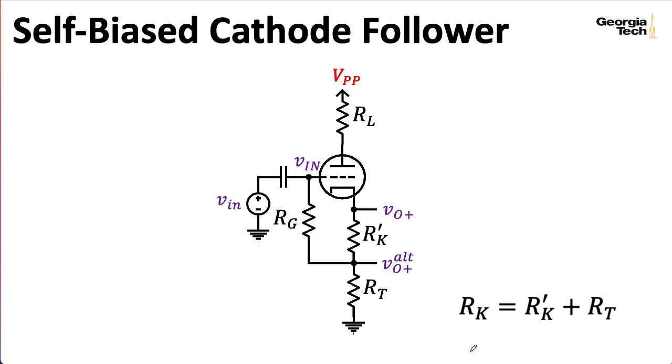As a bit of review, we split the cathode resistance into two separate resistors, and you can take the output from two different points. I've mostly seen people take the output directly from the cathode. In this practical self-bias scheme for the cathode follower, we connect the grid leak resistor to this middle point between the two cathode resistances instead of directly to ground.